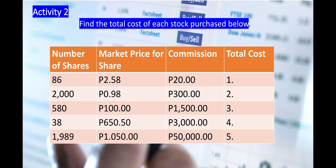For Activity 2, you are going to find the total cost of each stock purchase. The first column is the number of shares, the second column is the market price per share, the third column is the commission, and you are going to find the total cost. To find the total cost, multiply the number of shares by the market price per share, then add the commission.